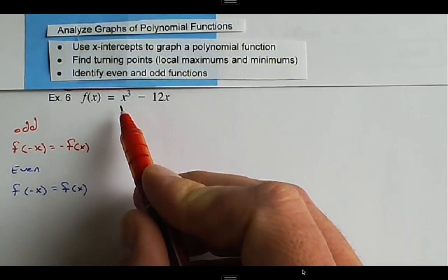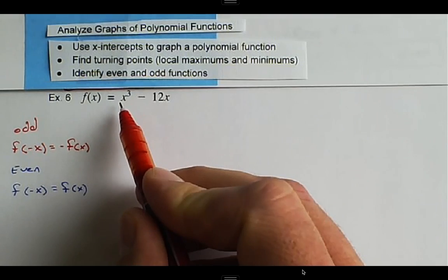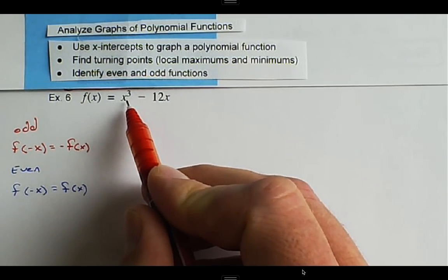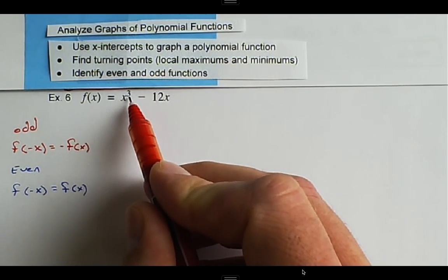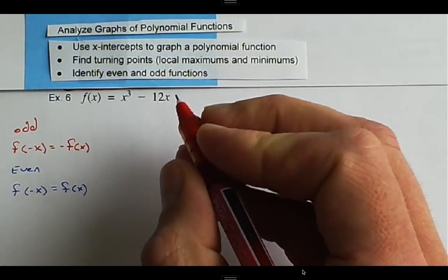And so we expect that the possibility of it being odd are pretty good because it has the highest degree of three, which is an odd exponent.